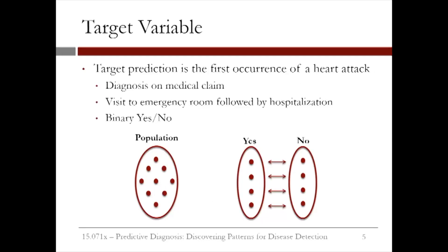What was the target variable we are trying to predict? The target prediction variable is the occurrence of a heart attack. We define this from a combination of several claims: namely, diagnosis of a heart attack alongside a trip to the emergency room followed by a subsequent hospitalization. Only considering heart attack diagnoses associated with a visit to the emergency room and follow-on hospitalization helps ensure that the target outcome is in fact a heart attack event. The target variable is binary, denoted by plus 1 or minus 1 for the occurrence or non-occurrence of a heart attack in the targeted period of 90 days.